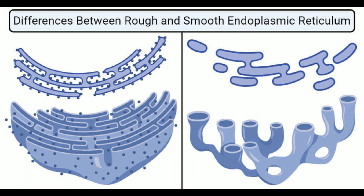Rough ER possesses narrow pores below the ribosomes that allow the passage of newly synthesized polypeptides to the cytosol; no such pores are present on smooth ER. Ribophorins are present on the surface of rough ER but absent on smooth ER. Rough ER is involved in the formation of lysosomes, while smooth ER is involved in the formation of spherosomes or oleosomes. Numerous rough ER is found in protein-synthesizing cells, while numerous smooth ER is found in lipid-synthesizing cells. RER is mostly found in cells of glands and protein-producing organs; SER is mostly found in muscle cells and nerve cells. Rough ER provides proteins and lipids for the Golgi apparatus, while smooth ER provides vesicles for the cis-face of the Golgi apparatus.